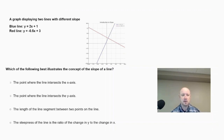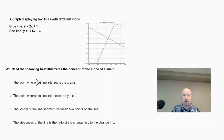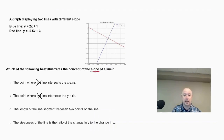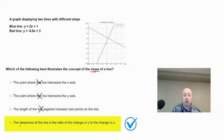They give us a system of equations with a blue line and a red line graphed. The point where the line intersects the x-axis is the concept of the x-intercept — not slope. The point where the line intersects the y-axis is the concept of the y-intercept — again, not slope. The length of the line segment between two points introduces the distance formula. So our best answer is the fourth choice: the steepness of the line is the ratio of the change in y to the change in x — that is the definition of slope.